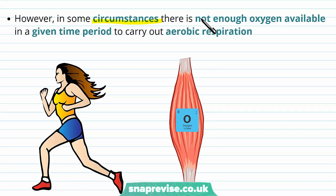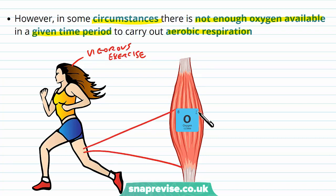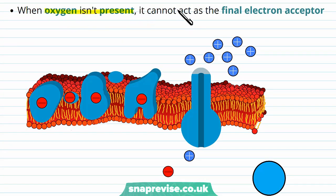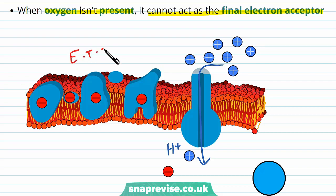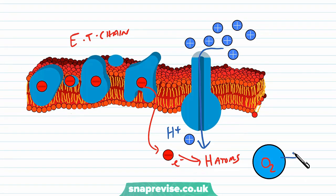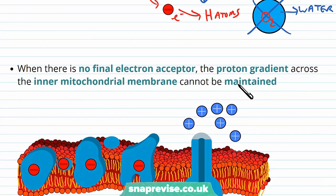However, there are some circumstances where there isn't enough oxygen available in a given time period to carry out aerobic respiration. For example, during vigorous exercise our muscles might be contracting so much that the level of oxygen goes down. When oxygen isn't present it can't act as the final electron acceptor — oxygen takes these electrons and hydrogens to form water, but obviously when oxygen isn't available it's not able to do this.